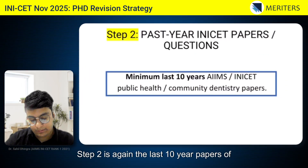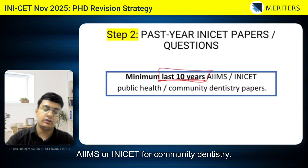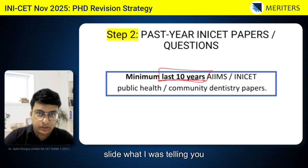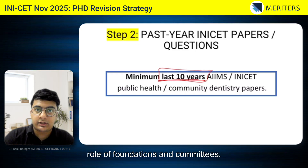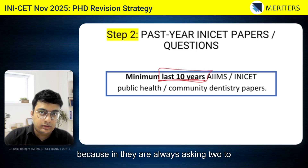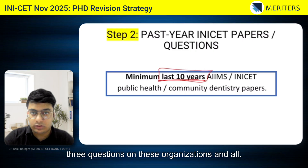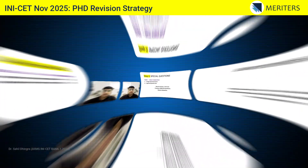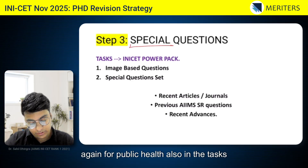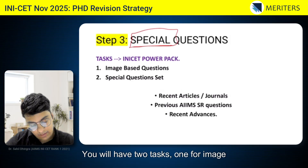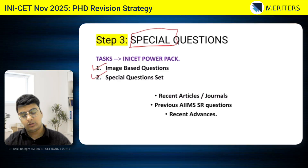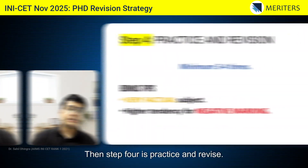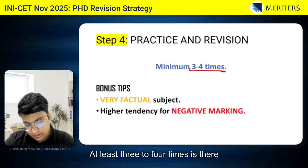Step 2 is to go through the last 10-year papers of AIIMS or INICET for community dentistry. This is one of the most important aspects. You will find the role of foundations and committees highlighted there, because they are always asking two to three questions on these organizations. In the INICET Power Pack, there are special question sets for public health covering previous year SR questions, recent advances, and articles.